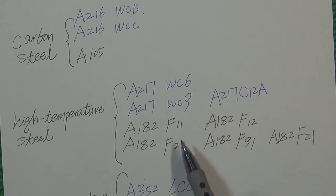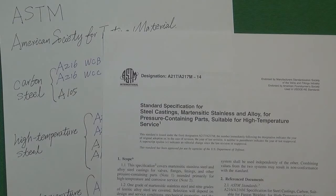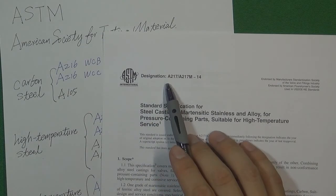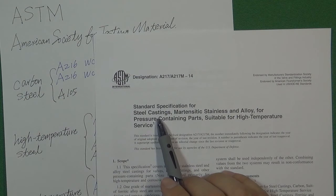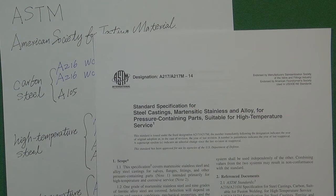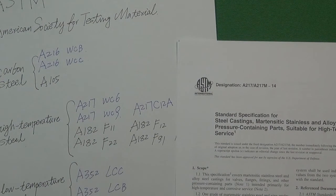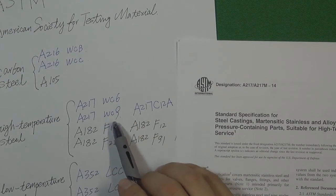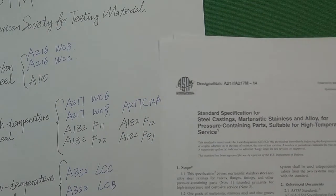Now let's look at the standards for the two groups of high temperature material — casting and forging. This is ASTM A217, the standard for casting high temperature carbon steel. The materials WC6, WC9, and C12A are all located in this standard.